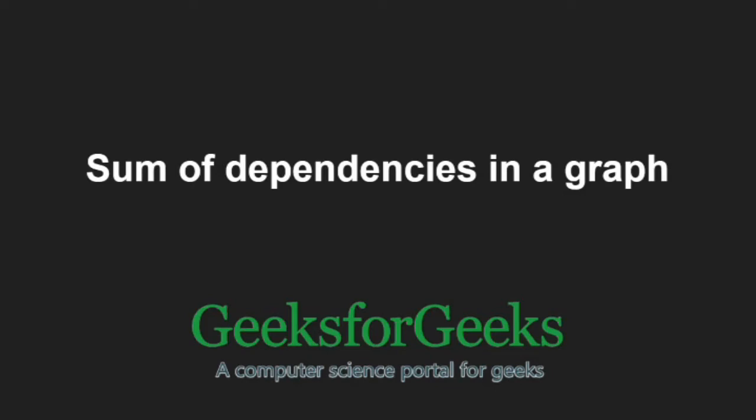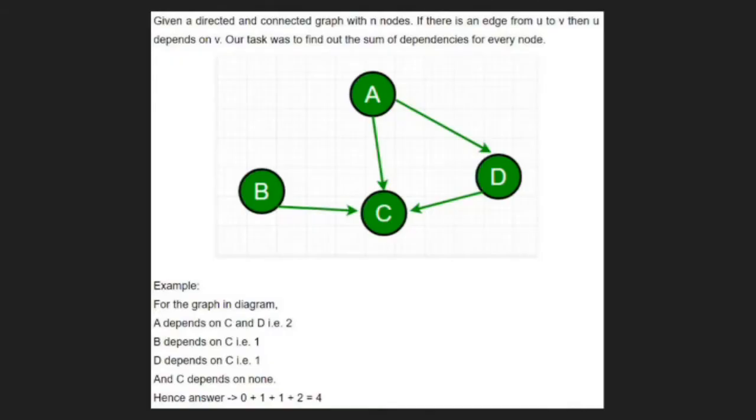First, let us take an example. If there is an edge from vertex u to vertex v, then u depends on v.